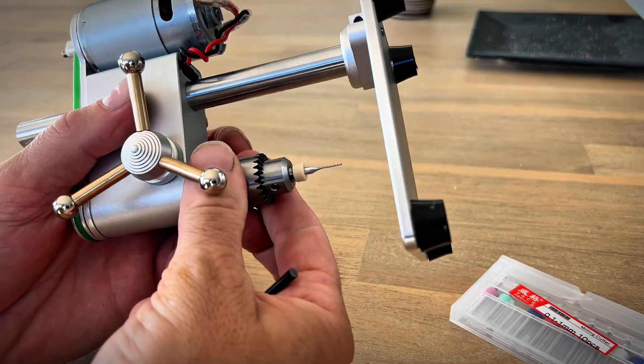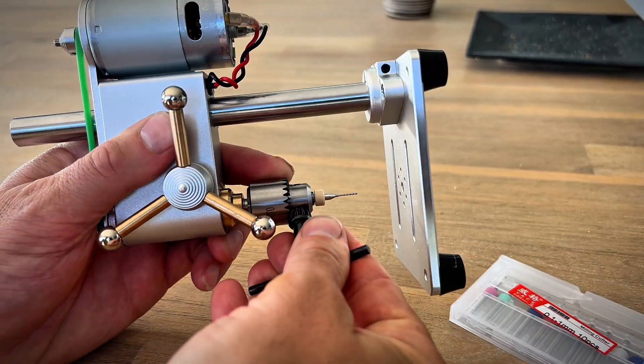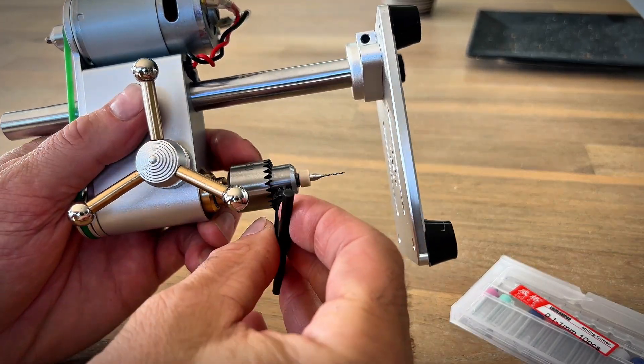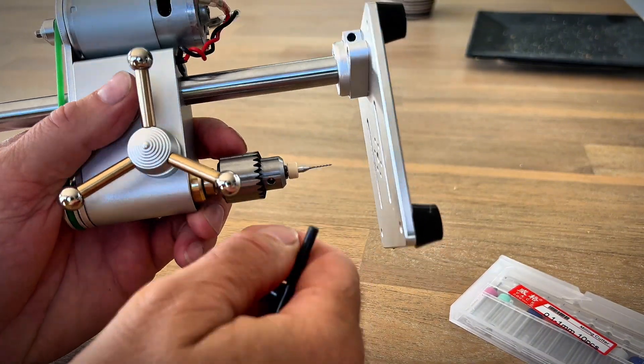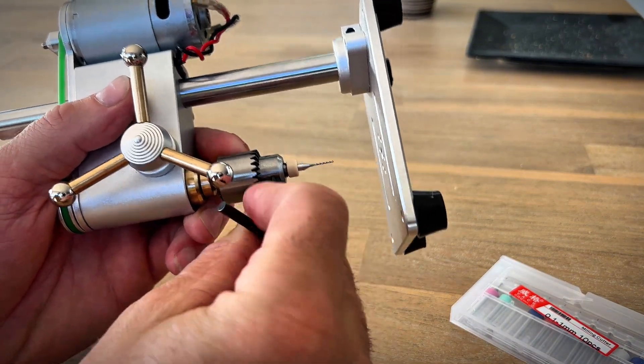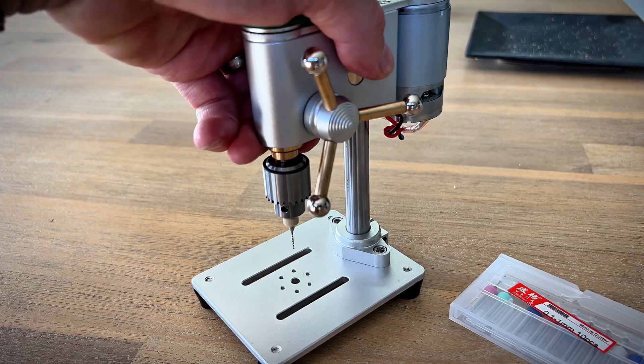Now don't forget to use safety glasses, because these drill bits are so small that if it pings off and snaps, you don't want that going anywhere near your eye. Make sure it's nice and tight.